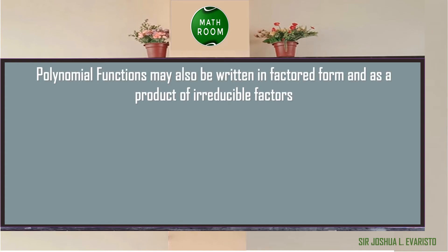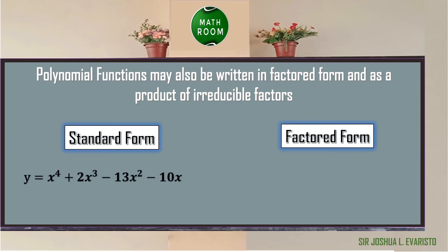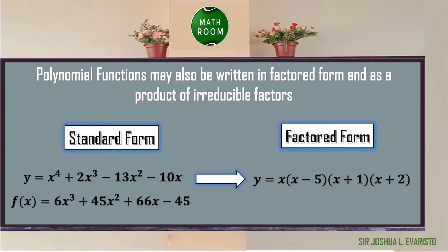A polynomial function may also be written in factored form as a product of irreducible factors — factors that can no longer be factored using real number coefficients. For example, y = x⁴ + 2x³ − 13x² − 10x in factored form is y = x(x − 5)(x + 1)(x + 2). Also, f(x) = 6x³ + 45x² + 66x − 45 in factored form is f(x) = 3(2x − 1)(x + 3)(x + 5).